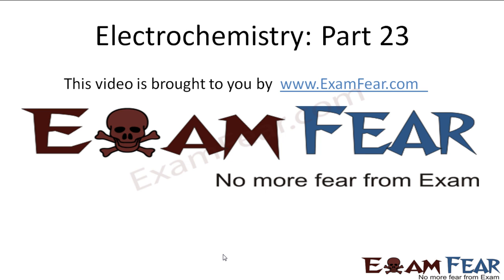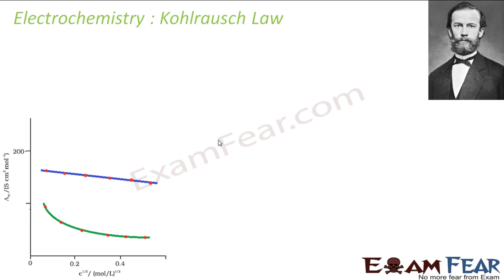Hello friends, this video on electrochemistry part 23 is brought to you by examphia.com. As per Kohlrausch's law, the blue one represents a strong electrolyte and the green one is a weak electrolyte. We just saw that a strong electrolyte example is KCl and a weak one is acetic acid.